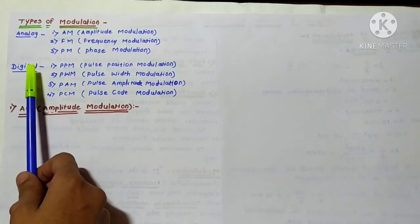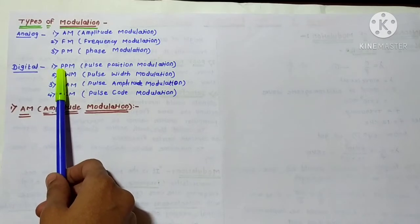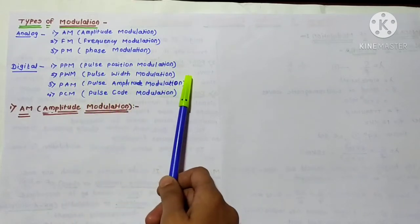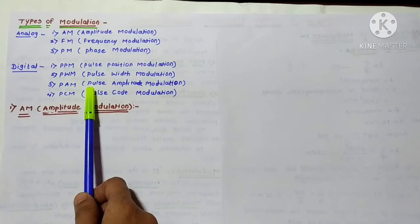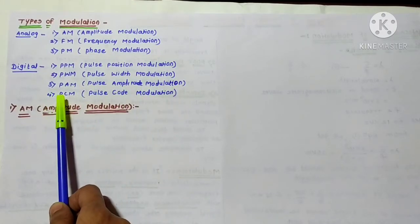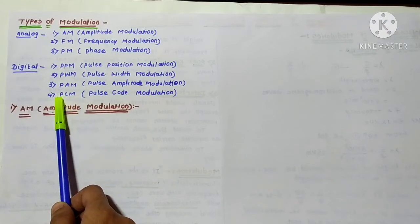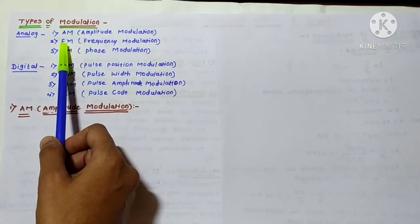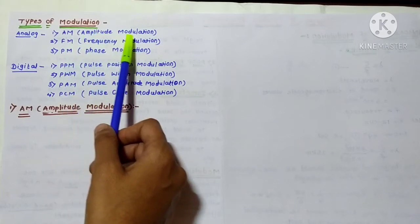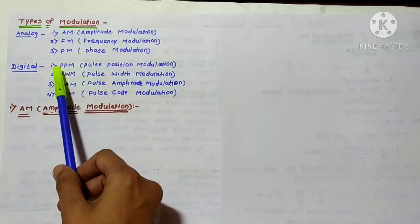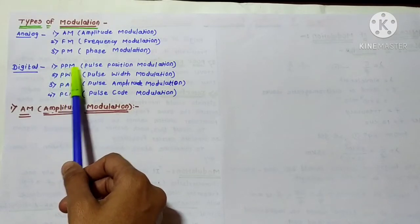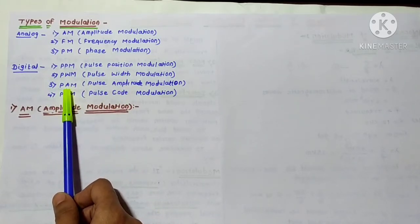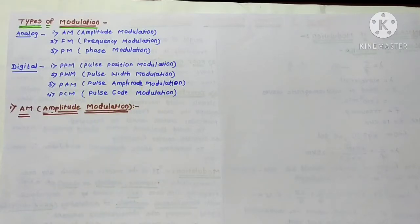In digital modulation, the first type is PPM (Pulse Position Modulation), second is PWM (Pulse Width Modulation), third is PAM (Pulse Amplitude Modulation), and fourth is PCM (Pulse Code Modulation). Just as analog modulation changes amplitude, frequency, or phase, digital modulation changes the position, width, or amplitude of a pulse accordingly.